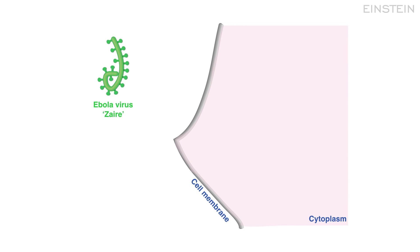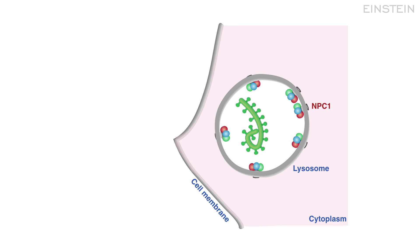We and others have shown that Ebola has this really sneaky MO for getting into cells to start an infection. What it does is it convinces the cell to take it up or engulf it into a membrane-bound structure called a lysosome.